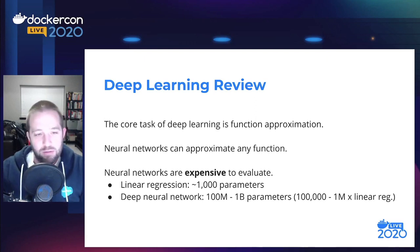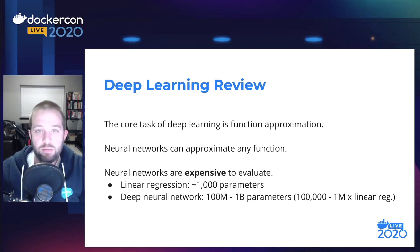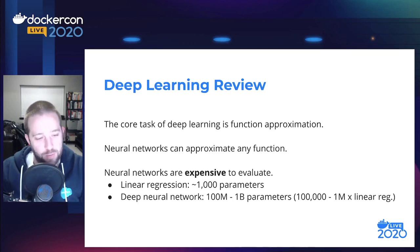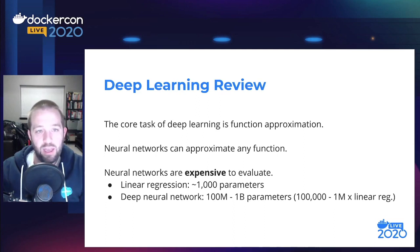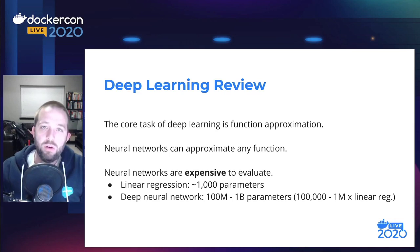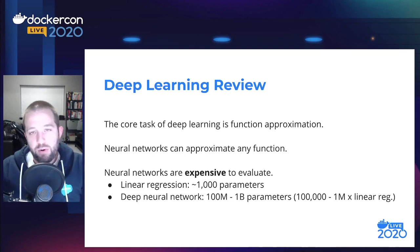A great application of deep learning is self-driving cars. These cars are using neural networks for a number of tasks, but an easy one is pedestrian detection. These neural networks are simply trying to learn a function that takes an input — an image of what's in front of the car — and determine whether there is a pedestrian in that image. Now, what makes this so difficult? Well, neural networks are very expensive to evaluate.